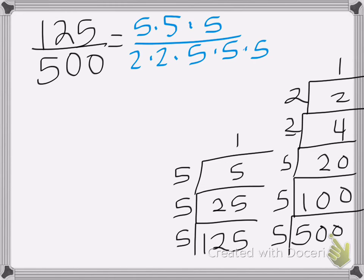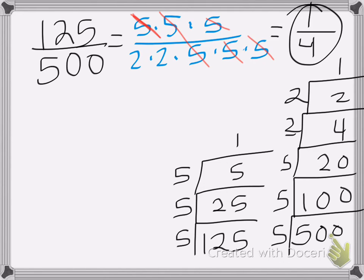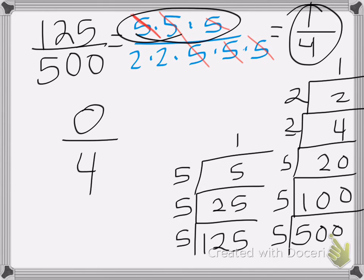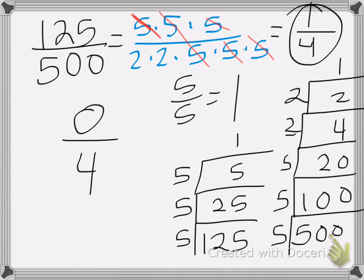Now we cancel. My 5s cancel. So I can't have a 0 on top. Remember, when we cancel, we're turning these 5s into 1s. So this is going to equal 1, because I have nothing left on top except for 1, over 2 times 2, which is 4. My answer is 1 fourth. Make sure you don't put 0 over 4, because I'm not getting rid of these 5s — I'm changing them into 1s, because 5 over 5 is equal to 1.